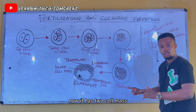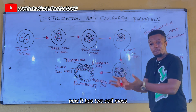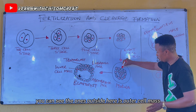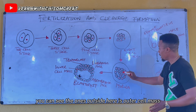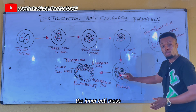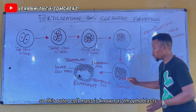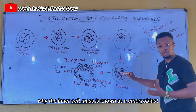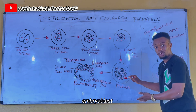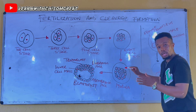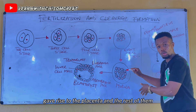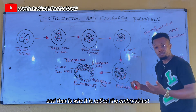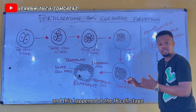At the morula stage, it has two cell masses: the outer cell mass — the cells on the outside — and the inner cell mass — the cells on the inside. The outer cell mass is known as trophoblasts, and the inner cell mass is known as embryoblasts. The outer cell mass gives rise to the placenta, while the inner cell mass gives rise to the main embryo. This happens at the 16-cell stage.